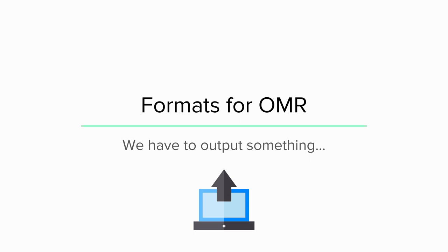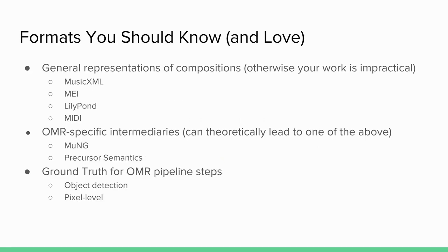The first problem we have talked about is the representations of music scores that we currently have. If you're trying to produce, as Professor Fuginaga defined OMR, some kind of digital encoding of the underlying music, we have to know what digital encodings are available to us. We can work with three groups of formats.